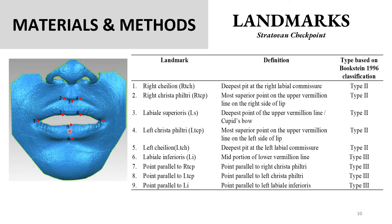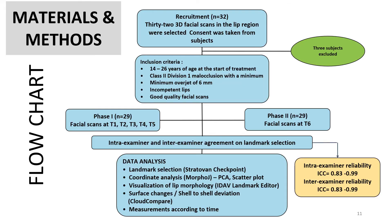Nine landmarks were identified in the lip region according to the given definitions. This flowchart summarizes the methodology of this study. ICC, Intra-Class Correlation Coefficient, was done to test intra-examiner and inter-examiner reliability, and a range of 0.83 to 0.99 was obtained, implying reliable and reproducible landmarking. I started off with 32 subjects; three were excluded as they moved to another orthodontic facility, giving a final sample size of 29. Multiple software were used for data analysis.